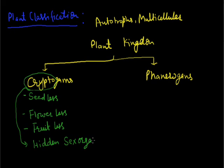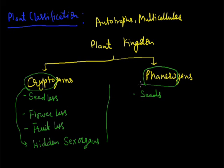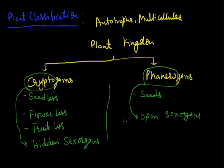In the case of Phanerogamae, these are the plants which have seeds. 'Phenero' means they are having open sex organs, and 'gams' means marriage. So in this classification we discuss two groups, or two sub-kingdoms, of the plants.